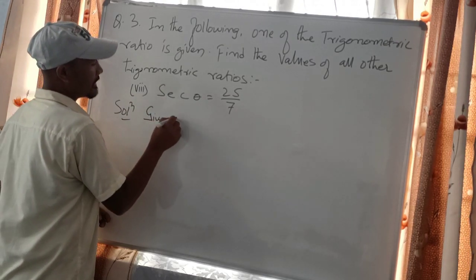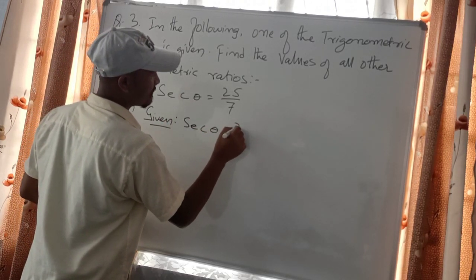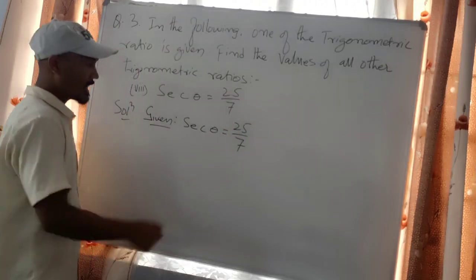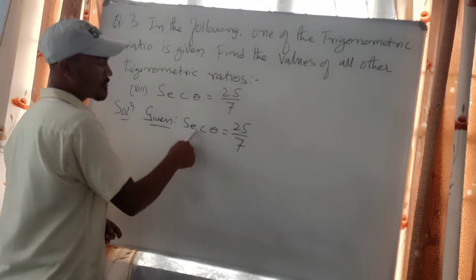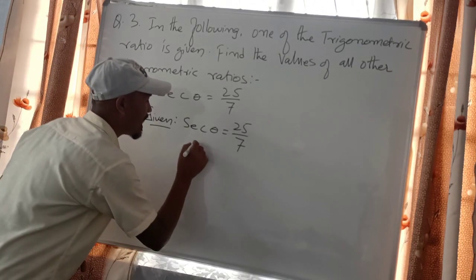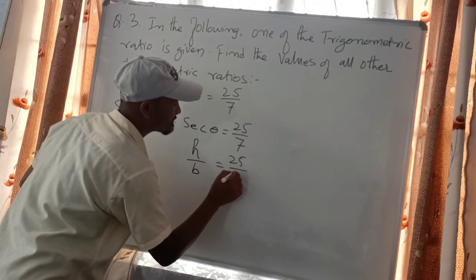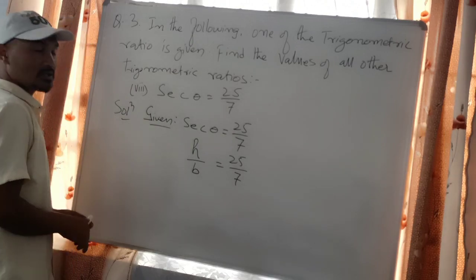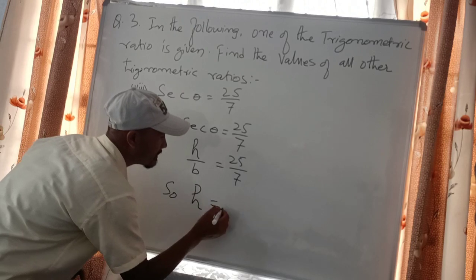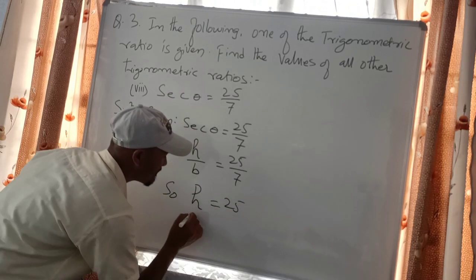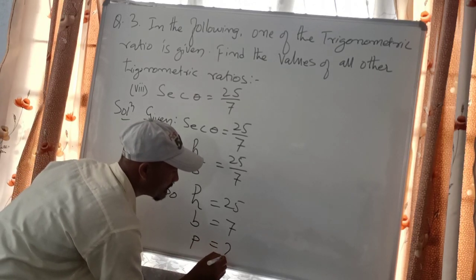So it is given that sec of θ is 25 by 7. Using the formula, sec θ equals hypotenuse over base. So comparing: hypotenuse is 25, base is 7, and the perpendicular is yet to be found.